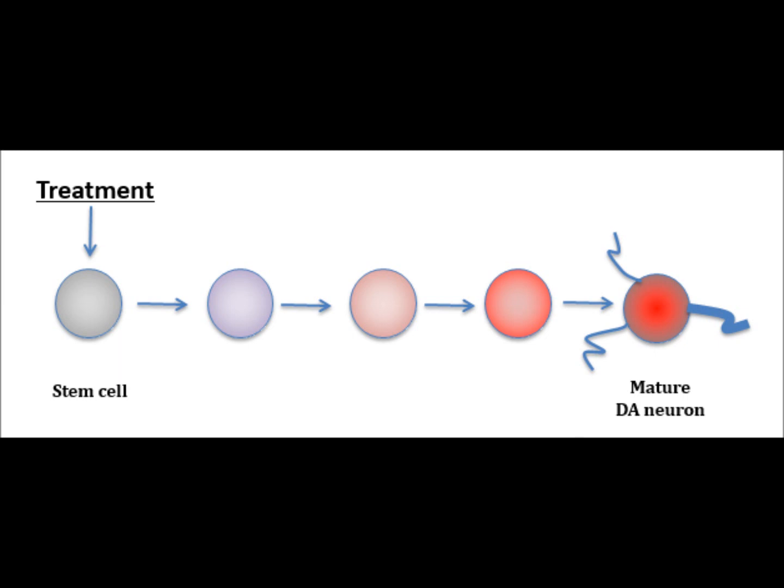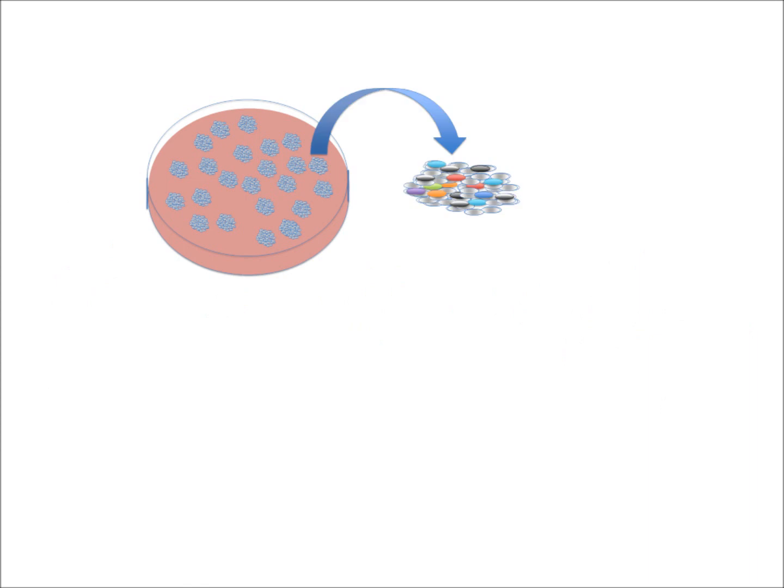We have a genetic approach that can make stem cells turn into dopamine neurons. Here we see how stem cells can become many different cell types. Dopamine neurons are indicated in red. If there are stem cells left behind, they can turn into tumors if the cells are put into patients.